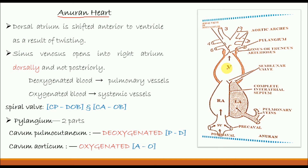The ventricle opens into the conus arteriosus. The lumen of the conus arteriosus is called the pylangium, and this is the spiral valve, also called the septum valve. The conus arteriosus twists by 270 degrees, due to which this valve becomes spiral, and it divides the pylangium into two separate parts.